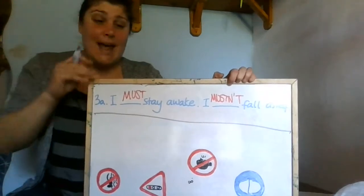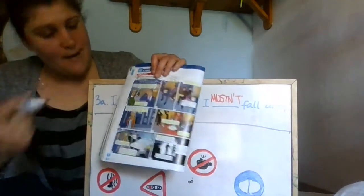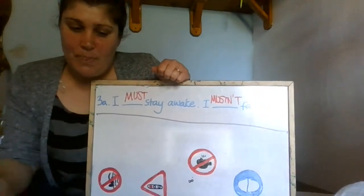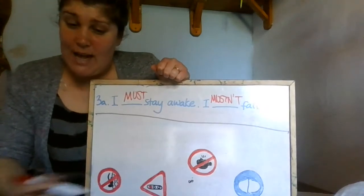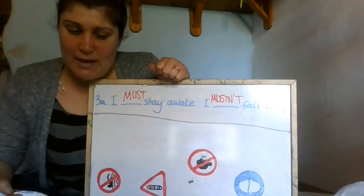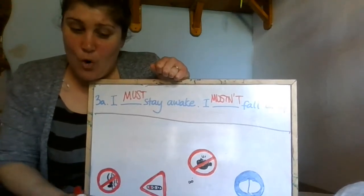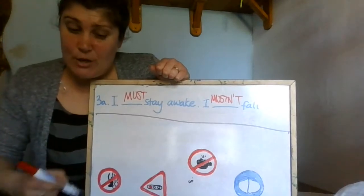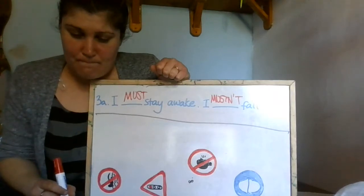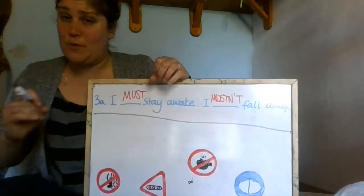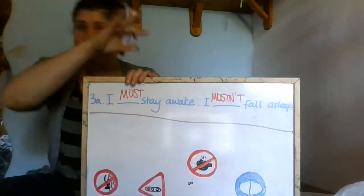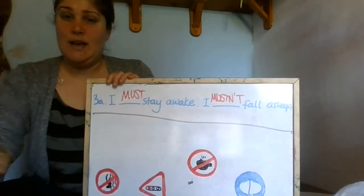And 'I mustn't fall asleep' means it's prohibited — don't do it, it's very bad. Now, can you find any other examples in this story of must and mustn't? Look at picture 3: 'You mustn't touch that switch.' In picture 4: 'I must go and have a look.' So remember, must = obligation, and mustn't = prohibition.